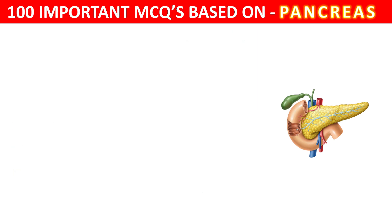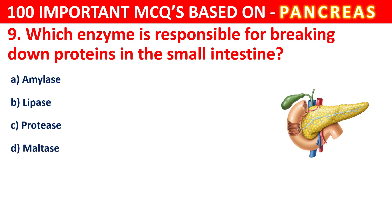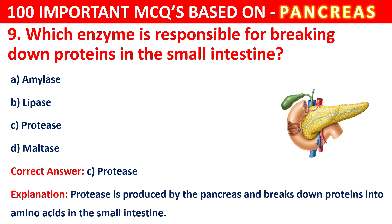Question 9. Which enzyme is responsible for breaking down proteins in the small intestine? Your options are Amylase, Lipase, Protease, or Maltase. The correct answer is C, that is Protease. Protease is produced by the pancreas and breaks down proteins into amino acids in the small intestine.